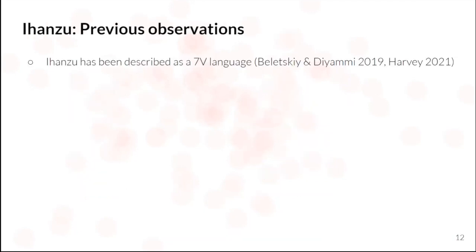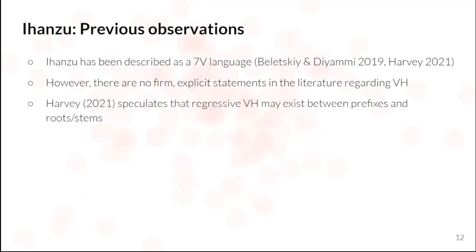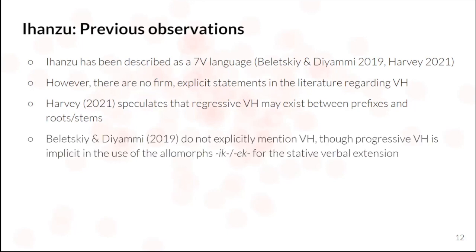Now, when it comes to Ihanzu, it's been previously described as a seven vowel language, but to the best of my knowledge, there have been no firm or explicit statements about the system of vowel harmony that may or may not exist in the language. So Andrew, in the introductory talk to our course, speculated that there may be some sort of regressive vowel harmony that exists between, say, prefixes and roots. And then in the phonology and morphology sketch, they don't explicitly mention vowel harmony, but some sort of progressive vowel harmony is implicit in the transcription, in the use of two different allomorphs for the stative verbal extension. But it does seem that not all verbal suffixes alternate.